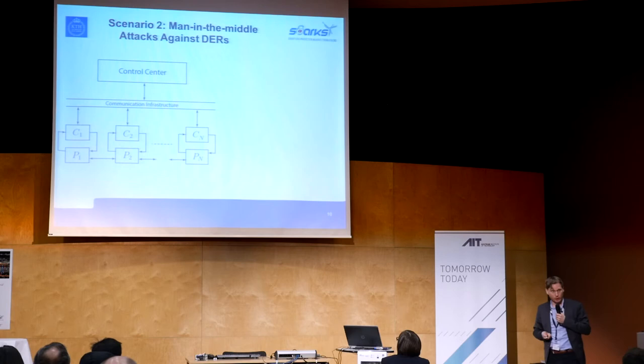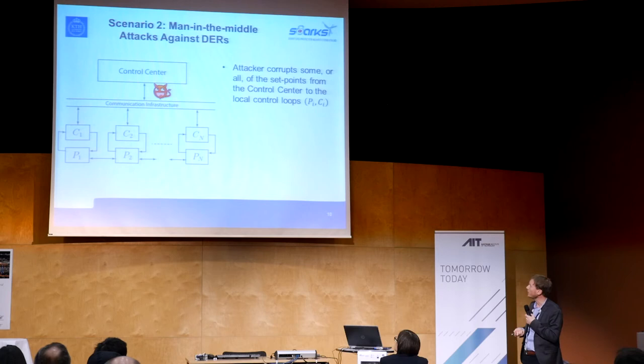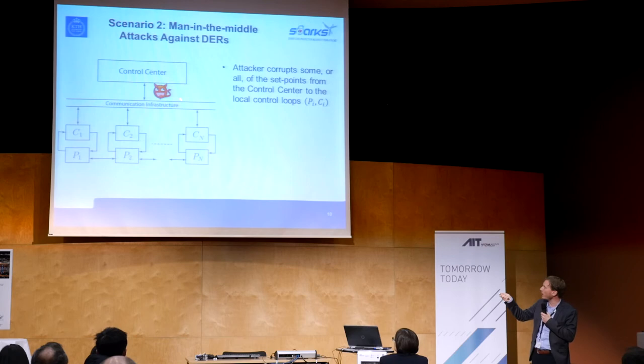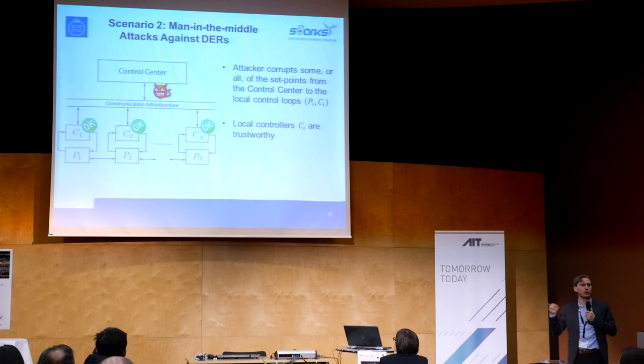I'll jump to the second scenario, which is related to the demo. It uses the same overall architecture, but the assumptions are different. Now we assume the attacker is coming in at a higher level — they've broken into the communication infrastructure between the control center and the local controllers. The attacker is interested in corrupting the commands being sent to the local controllers in order to steer them into an unwanted area. In this case, we assume the local controllers themselves are not corrupted — there is no Stuxnet attack. These controllers are actually behaving correctly.